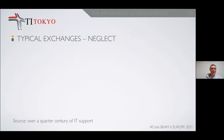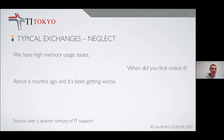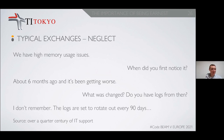And the last of the five — neglect: 'We have high memory issues.' 'When did you first notice it?' 'About six months ago, and it's been getting worse.' 'What was changed? Do you even have logs from then?' 'I don't remember. The logs are set to rotate out every 90 days.'